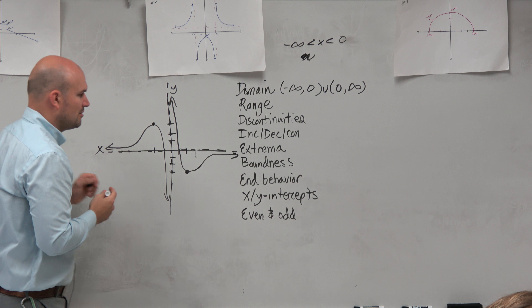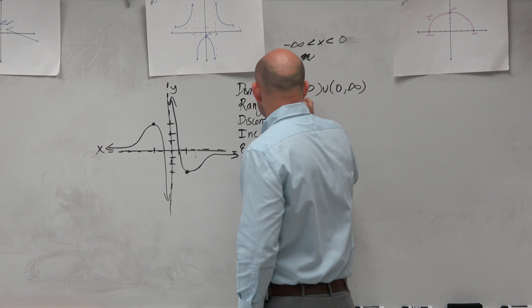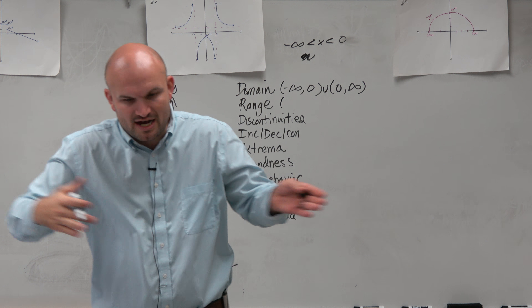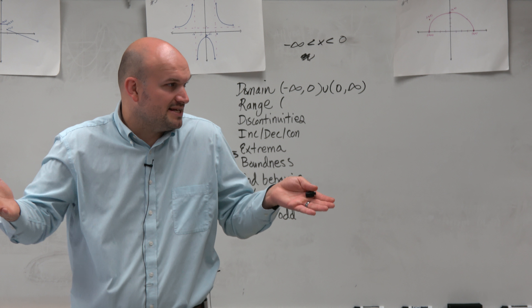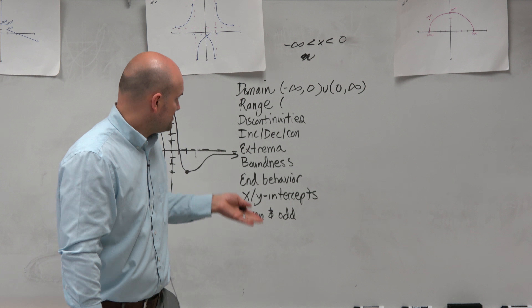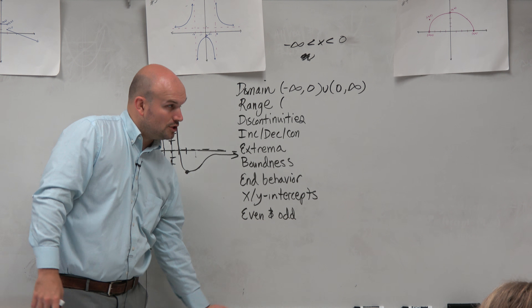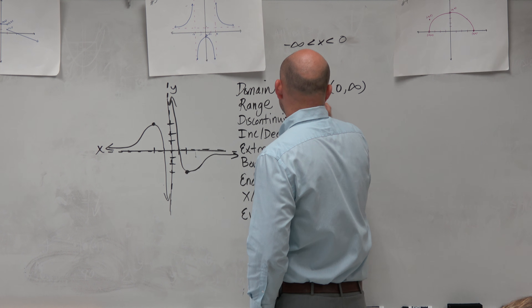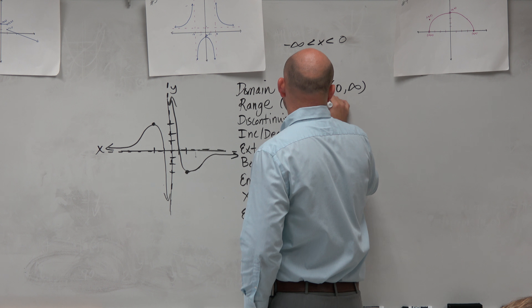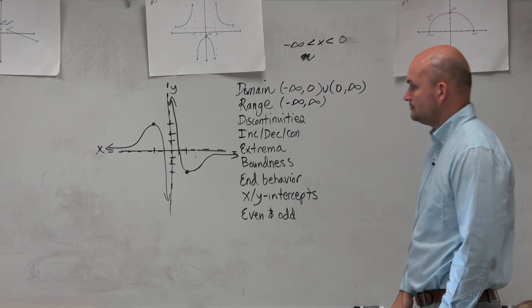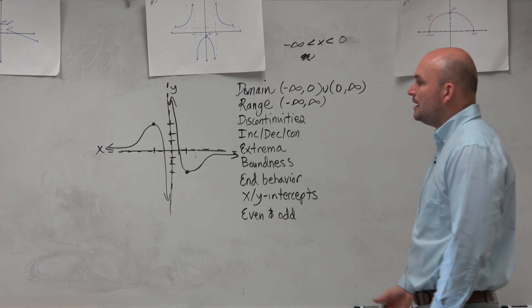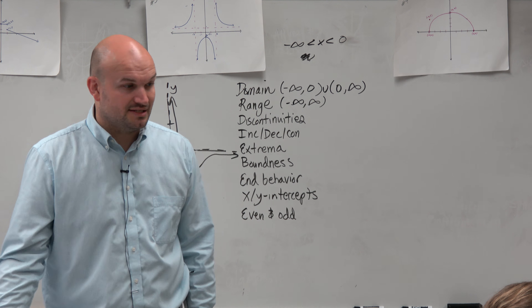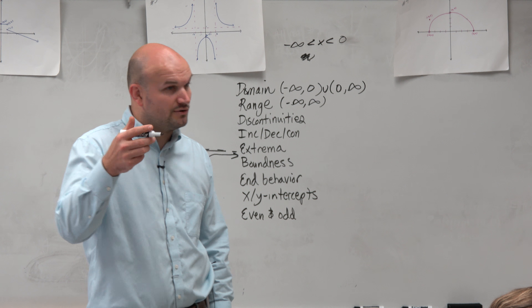Another way of thinking about that is: how far left does the graph go? How far right does the graph go? But in this example, we also need to understand that there's this dashed line that looks like these two graphs are approaching from the left and the right, and it doesn't seem like there's a defined value at that point.